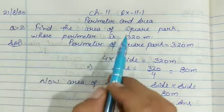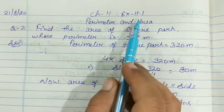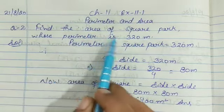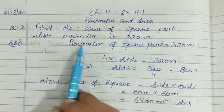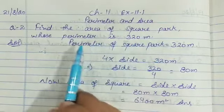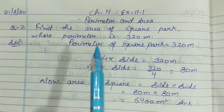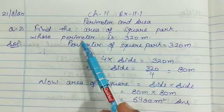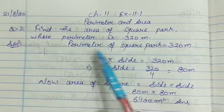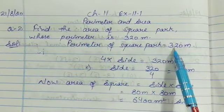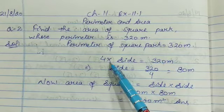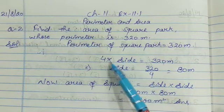Let's start exercise 11.1. Question number 2: Find the area of a square park whose perimeter is 320 meters. Here we need to find the area and we're given the perimeter. Perimeter of square park equals 320 meters. Perimeter of square is 4 into side, so 4 into side equals 320 meters.